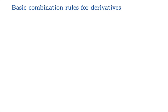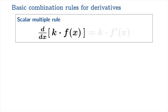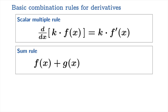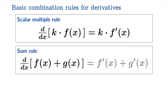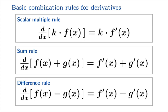So what are these basic combination rules? There's going to be a scalar multiple rule: if you start with a differentiable function f and scale it by a constant k, you can just take the derivative of the function and then scale it by that same constant. There's a sum rule: the derivative of two differentiable functions added together is the derivatives taken independently and then added. And there's a difference rule: the derivative of a difference of differentiable functions is just the derivatives taken independently and subtracted.